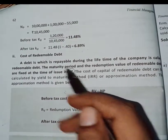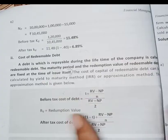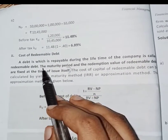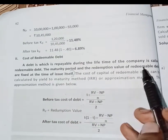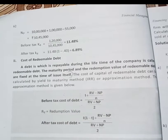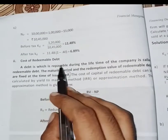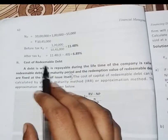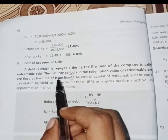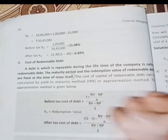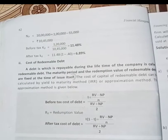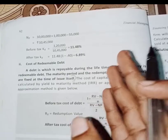For this video, let me tell you what is redeemable debt. Debt which is repayable during the lifetime of a company is called redeemable debt. The maturity period and the redemption value of a redeemable debt are fixed at the time of issue itself. That is why a company will be able to repay the debt.